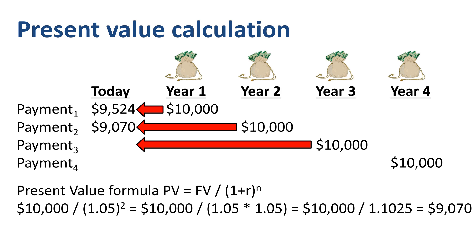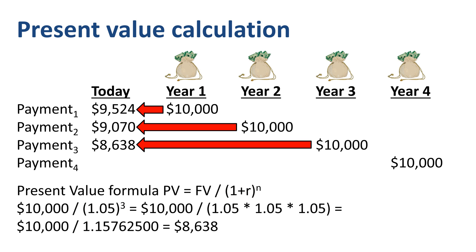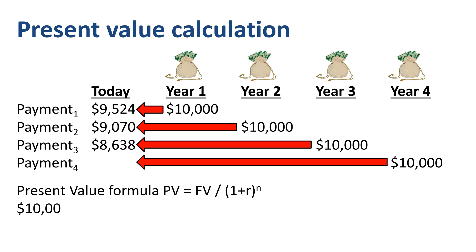And so on for the third and fourth payment. $10,000 divided by 1.05 to the power 3, and $10,000 divided by 1.05 to the power 4.